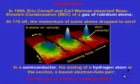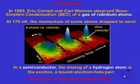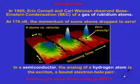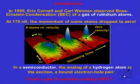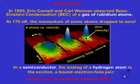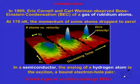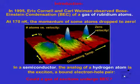Here's the discovery of Bose-Einstein condensation in a gas of atoms. At 170 nanokelvin, atoms dropped into the lowest momentum state. In a photo-excited semiconductor, the role of an atom is the exciton, a bound electron-hole pair. Could a gas of excitons undergo Bose condensation?